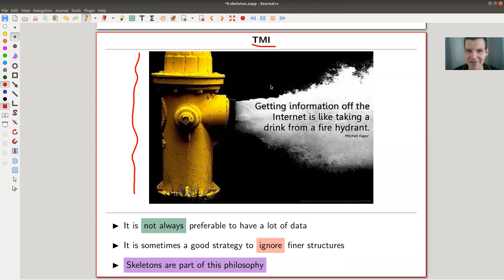And TMI is not always preferable. Too much information might not be really preferable, might not be what you want to do, right? Information overload is certainly not preferable. And it happens in real life, as well as in mathematics all the time. In some sense, it's really not always preferable to have lots of data. Sometimes it's just too much information. In some sense, it's much better to somehow ignore, let me call them finer structures, right? So category theory is this bird's eye perspective anyway. So we can't really do anything with finer structures. So maybe it's actually a preferable strategy to ignore that data. And skeletons fall exactly in this kind of philosophy.